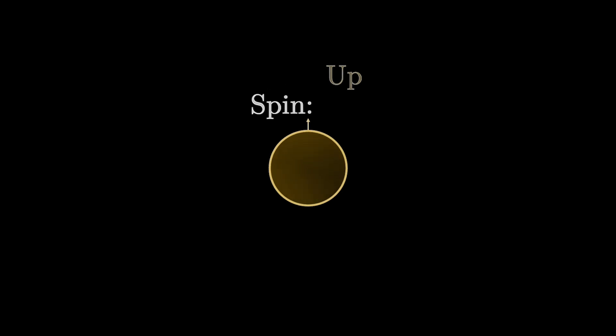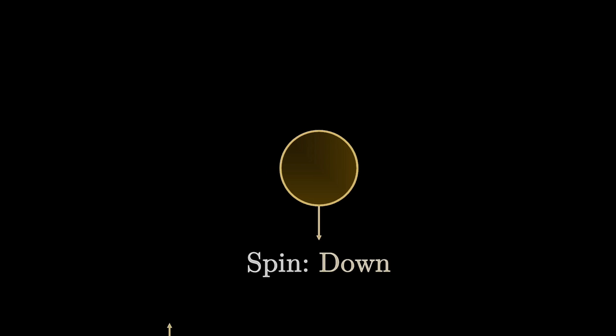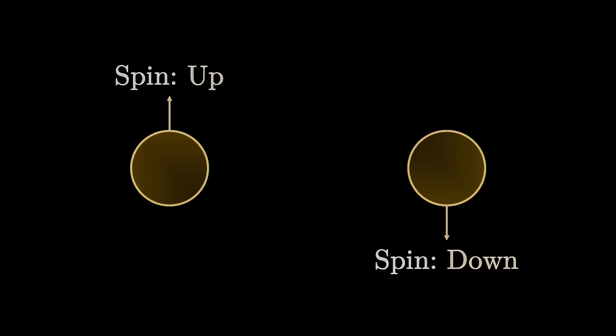Let us define certain things from this experiment that we have just conducted. Electrons have a property — sometimes they go up, sometimes down. Let us call this property the spin of an electron: it can either be spin up or spin down, and nothing in between, because this is what the experiment's result tells us. Why are we calling it spin? Are electrons actually spinning? No — it's a bad terminology, however they act as if they are spinning, so that is the reason why we call the property spin.